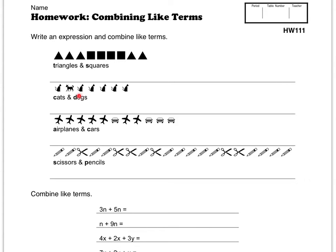You've got cats and dogs — C and D — airplanes and cars — A and C — and scissors and pencils, so S for scissors and P for pencils. I'm going to do the airplanes and cars one. It looks like I've got one, two, three, four, five airplanes. So I'm going to put 5A for these guys.